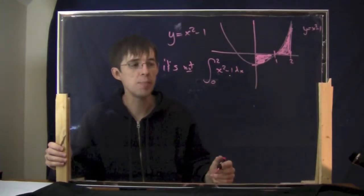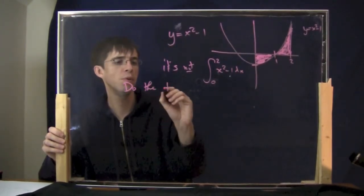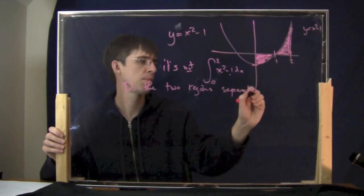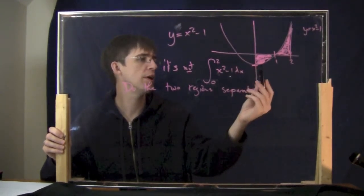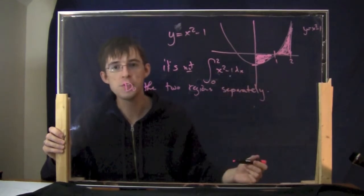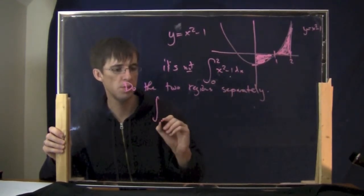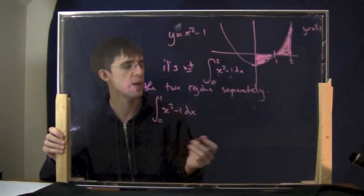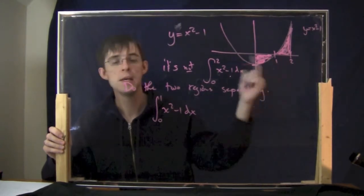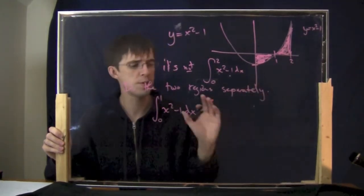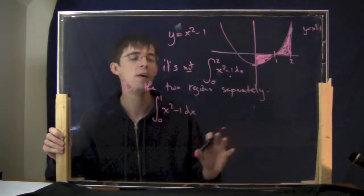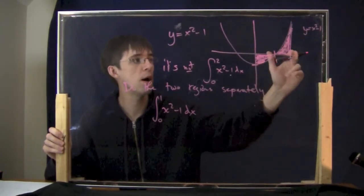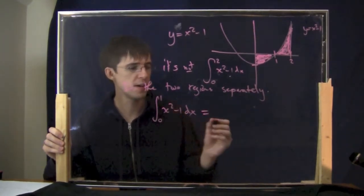To find the actual shaded area, you have to treat the two regions separately. That means: first, the integral from 0 to 1, then the integral from 1 to 2, and add them both together. The region from 0 to 1 is going to give a negative answer, so whatever I get there I'll make it positive, then add it to the result from 1 to 2, which should be positive.